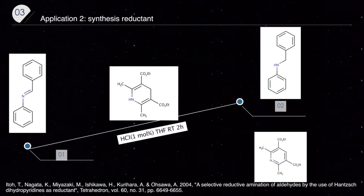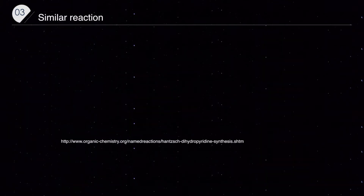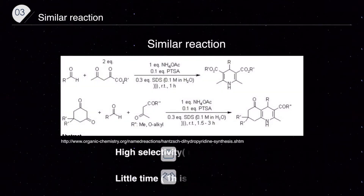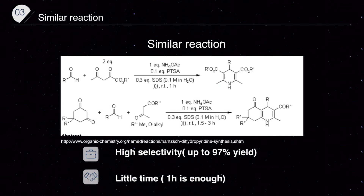As you can see, these double bonds have been reduced into single bonds. Additionally, people are always seeking to improve current synthesis reactions. Here are some advanced synthesis methods: a normal aldehyde reacts with two equivalents of diketone compounds with the help of ammonium acetate, PTSA, and SDS. This reaction can be performed at room temperature in just one hour, and the dihydropyridine product can be formed.